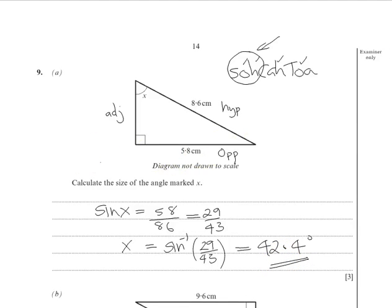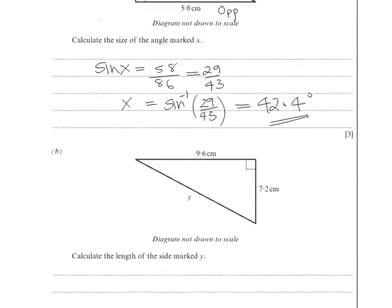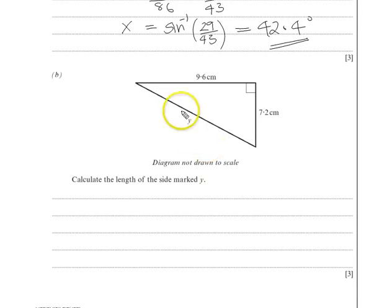Now let's go on to the next one, part B of question 9. So let's scroll down. Calculate the length of the side marked Y. But this is just Pythagoras. The longest side squared, which is Y squared. Let's write it down straight away. This is equal to the sum of the other two squares. So it'll be 9.6 squared plus 7.2 squared.